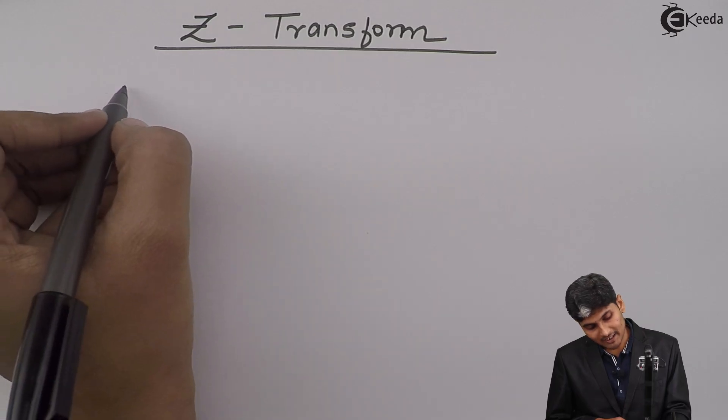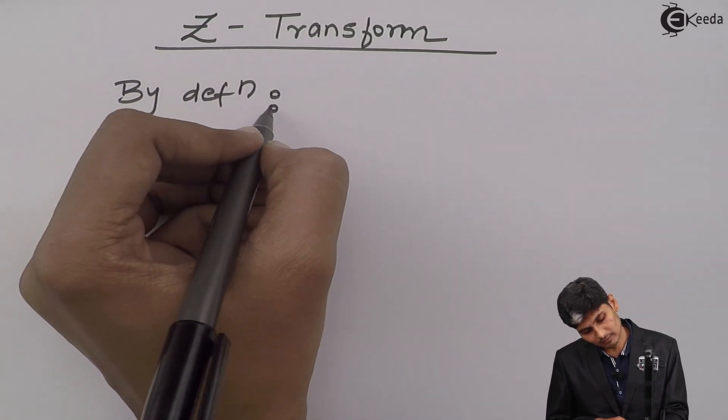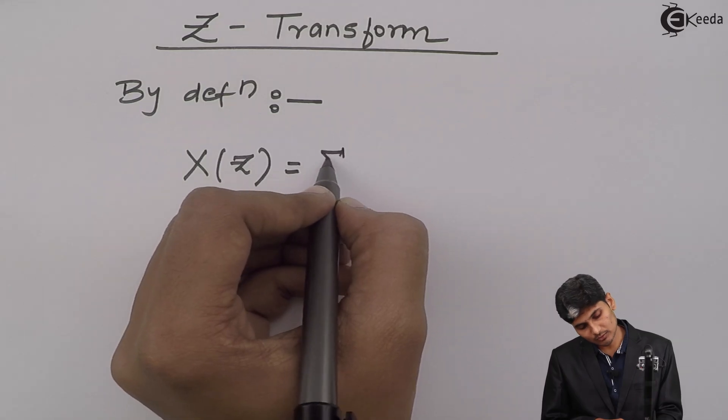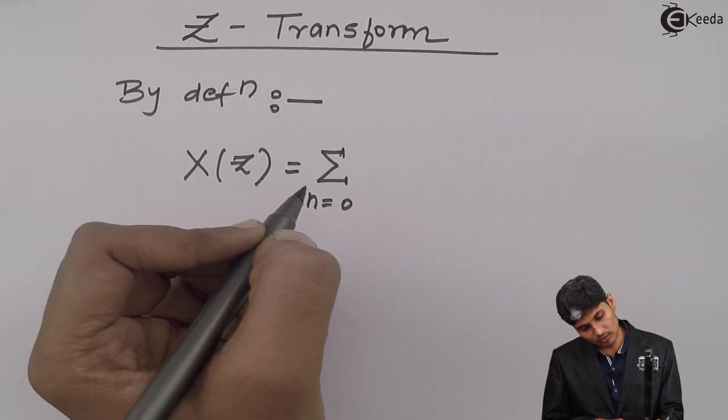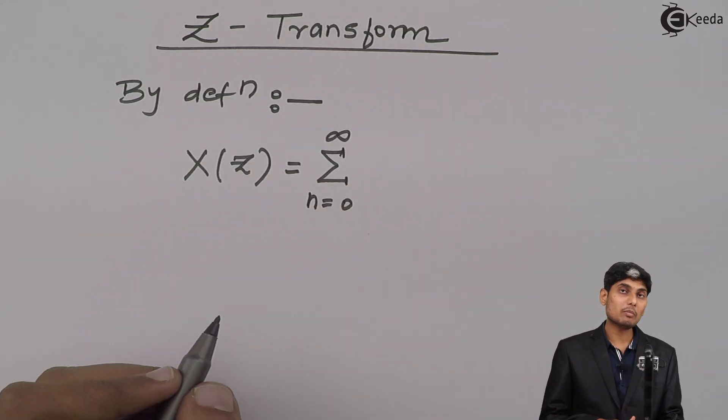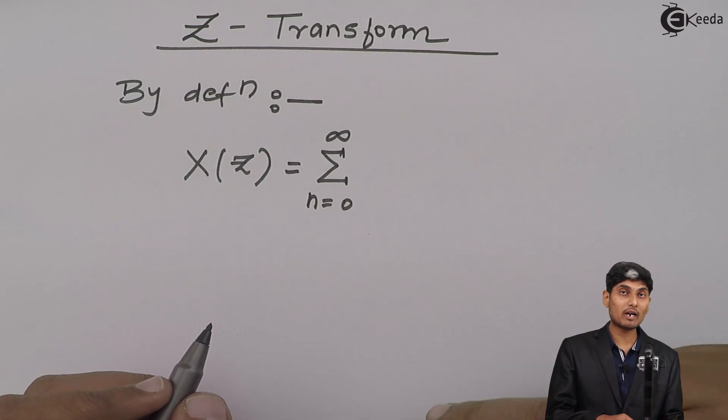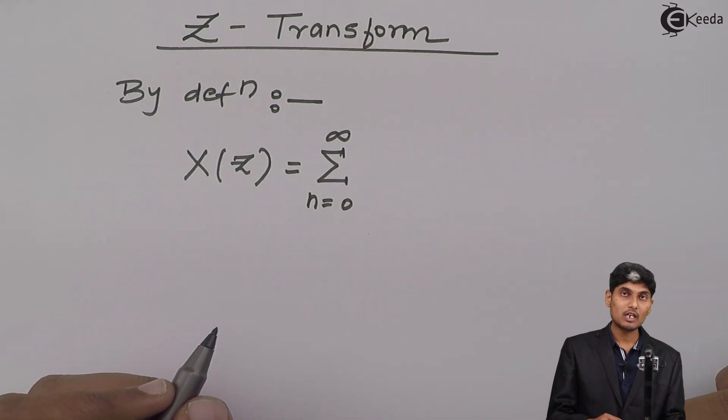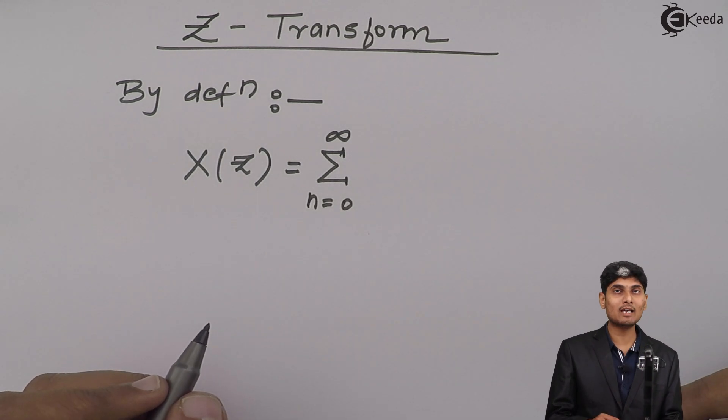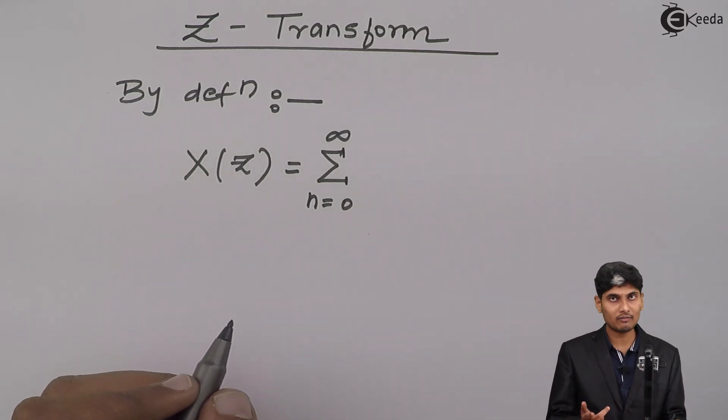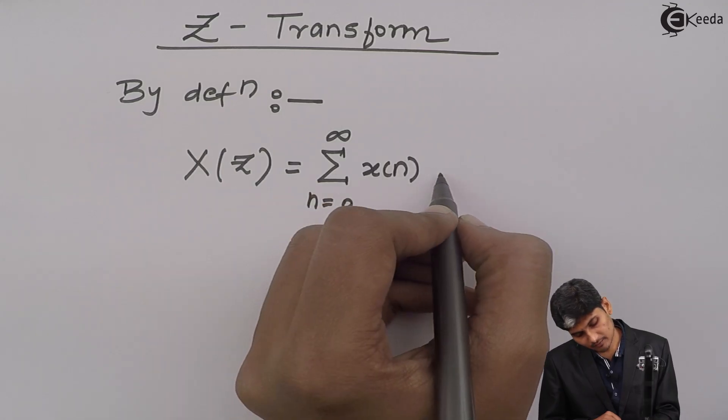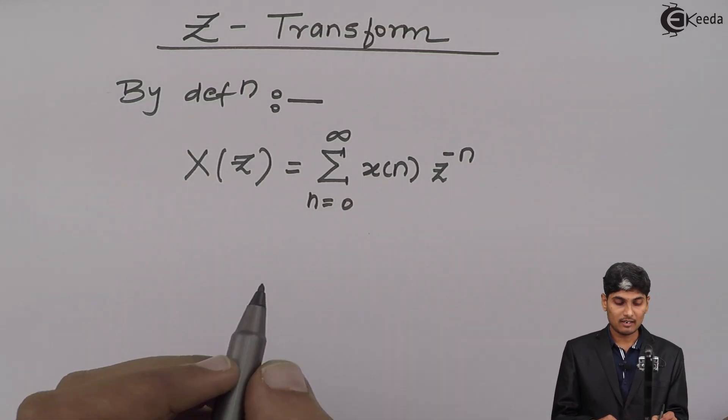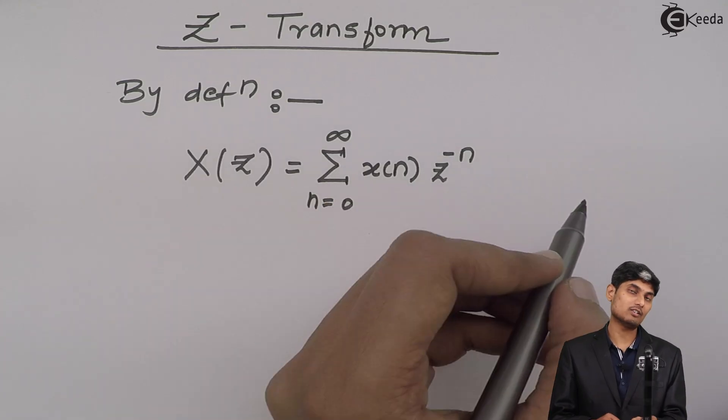By definition, a Z transform is denoted as X(z), which is equal to summation n going from 0 to infinity. It's not mandatory that it should go from 0 to infinity; it can go from minus infinity to plus infinity. If it's going from 0 to infinity, it's called a one-sided transform. If it's minus infinity to plus infinity, then it's called a both-sided transform. X(n) z raised to minus n - this is the definition of a Z transform.